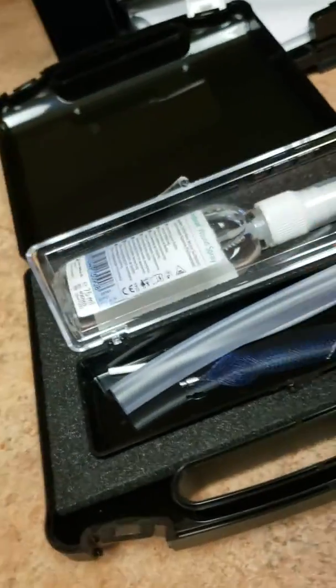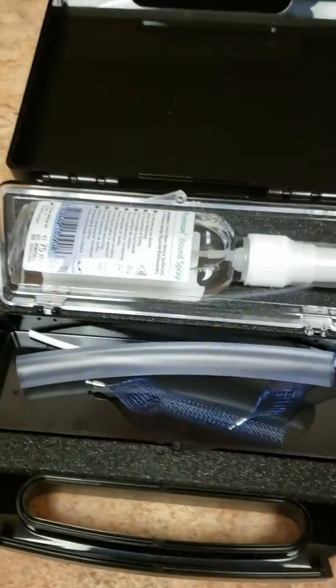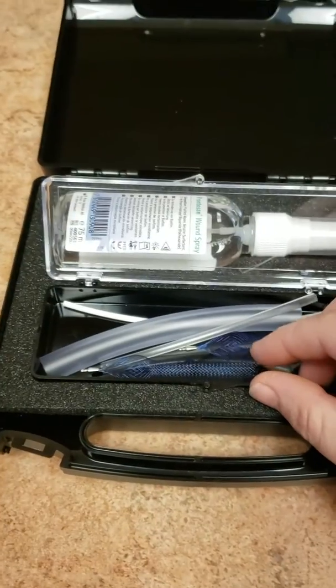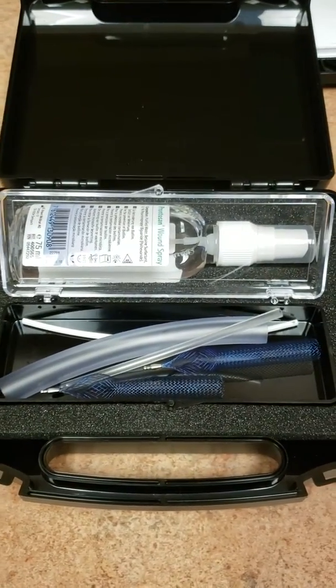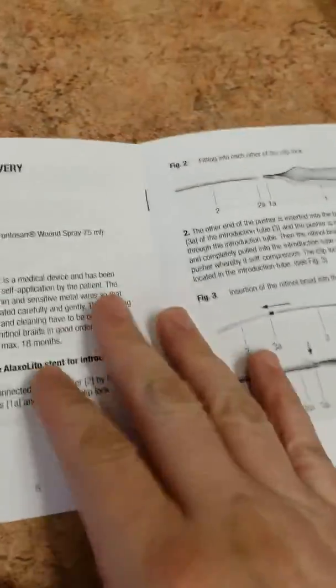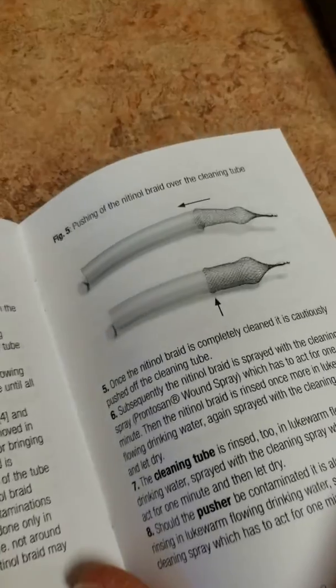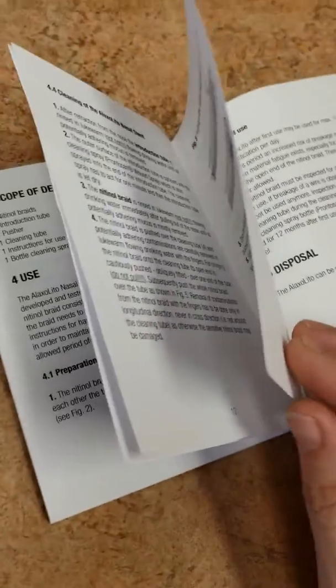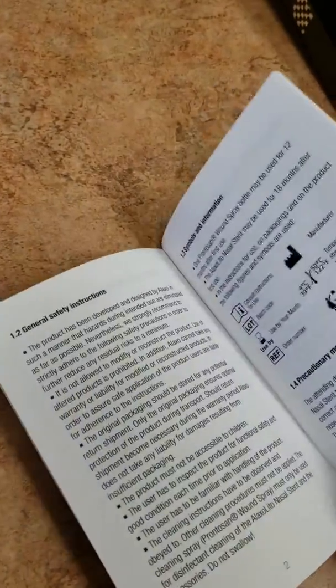So I hope this kind of gave you guys a better idea of what the stent involves and what all it comes with. It comes with two stents, one for each side of your nose. It's kind of crazy, but my spouse says it's working and it's actually opening the airway the way it's supposed to. So that's all good news for me, so far so good.